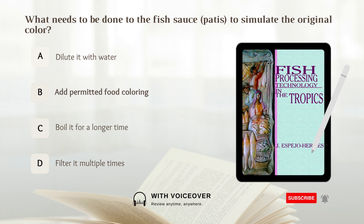B) Add permitted food coloring. Permitted food coloring may be added to diluted fish sauce to simulate the original color.